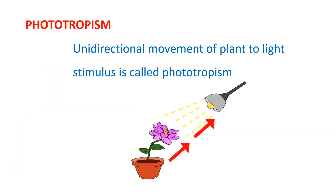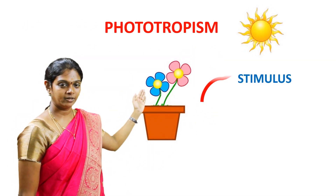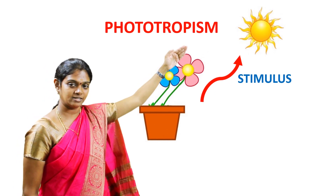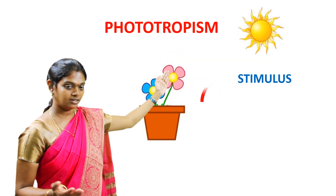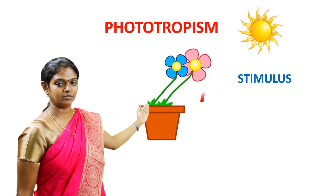Phototropism: the unidirectional movement of a plant in response to a light stimulus is called phototropism. Unidirectional movement means the growth of a plant in the same direction. Please look at this example — here we can see a plant moving towards sunlight. We observe that the stimulus is the sunlight, and this process is called phototropism.